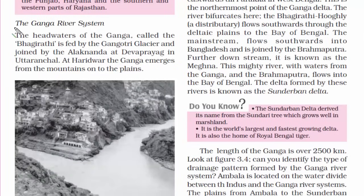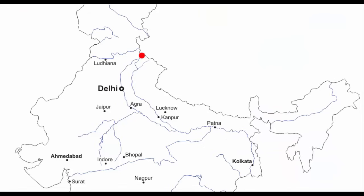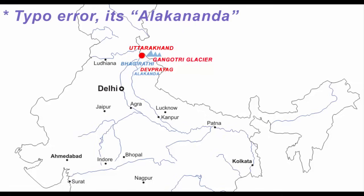Now let us read about the Ganga river system. Ganga starts near the western Himalayas in the Indian state of Uttarakhand, where you will find large chunks of glacier called the Gangotri glacier. Here, Bhagirathi is the name given to Ganga. So remember, Ganga originates from the Gangotri glacier and there it is named as Bhagirathi. As soon as it enters Devprayag in Uttarakhand, it joins the river Alakananda. After flowing 250 km through a narrow Himalayan valley, it reaches the plain area of Haridwar.